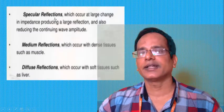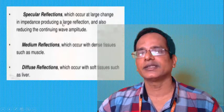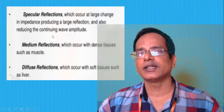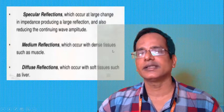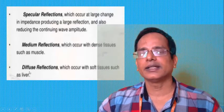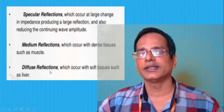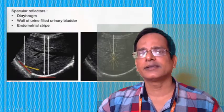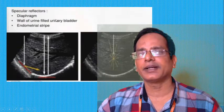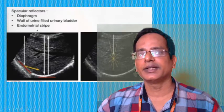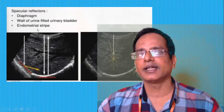Specular reflection occurs at large changes in impedance, producing a large reflection and reducing the continuing wave amplitude. Medium reflection occurs in dense tissues such as muscles. Diffuse reflection occurs with softer tissues such as the liver. Specular reflectors include the diaphragm and the wall of a urine-filled urinary bladder.